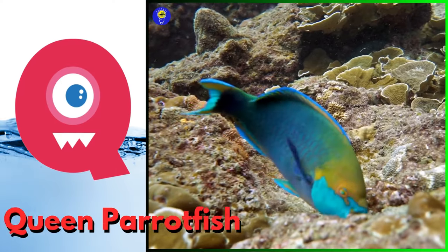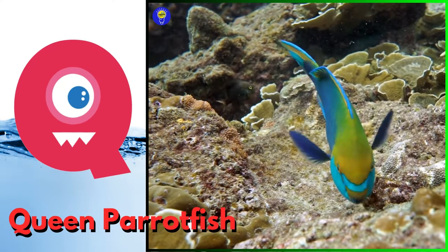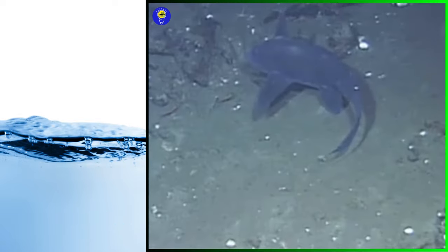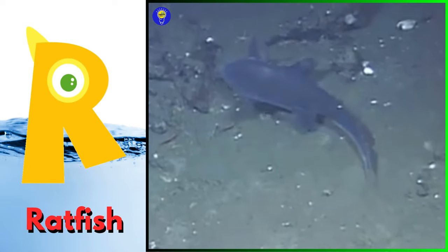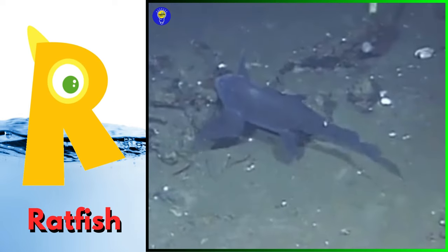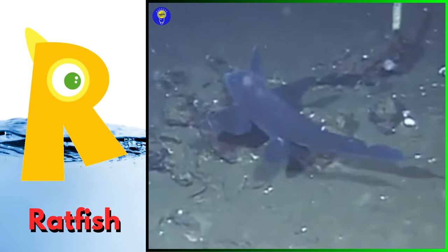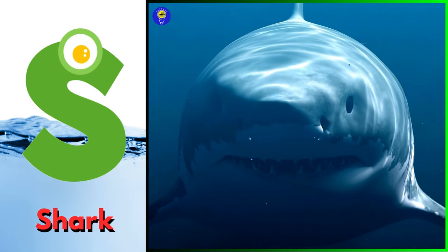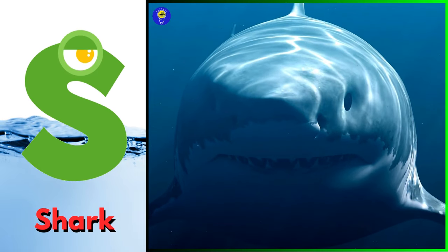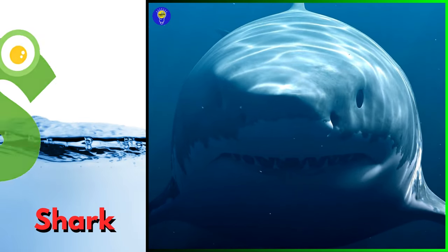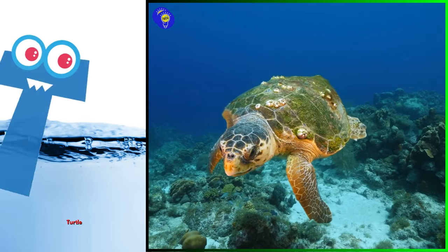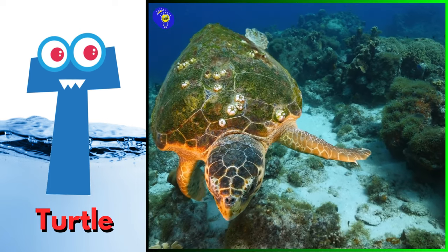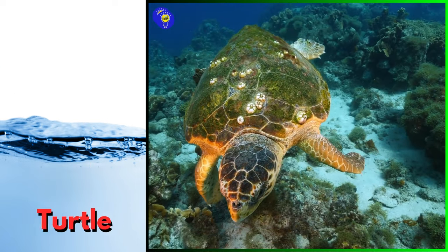Q is for queen parrotfish, kuh, quuh, queen parrotfish. R is for ratfish, ratfish. S is for shark, suh suh, shark. T is for turtle, tuh tuh, turtle.